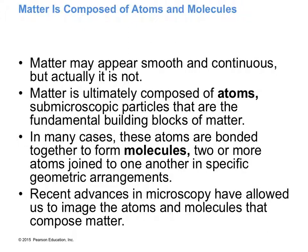The smallest unit you can get down to is the atom — the building block of matter. You can break the atom apart into protons, electrons, and neutrons, but then it's lost its identity as that element. Atoms can come together to form molecules — two or more atoms bonded together. Water is H₂O: two atoms of hydrogen with one atom of oxygen, bonded together in a specific geometry that gives it its functionality.